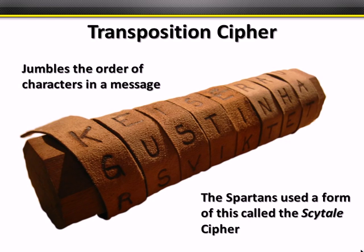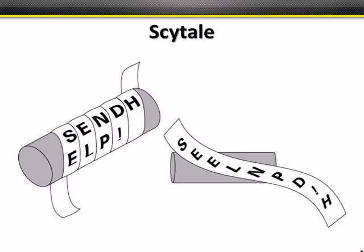Long ago, the Spartans used a device called a scytale. You wrap a strip of material around a dowel and write the message across its sides. When you pull the strip off, the characters are no longer in readable order — that's transposition, the diffusion we discussed. For example, 'send help' becomes S-E-E-L-N-P-D with an exclamation mark scrambled in.